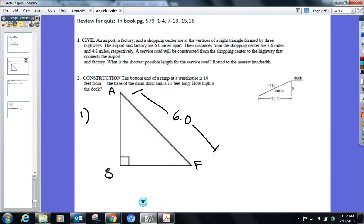And let's see, what's the 3.6? If it says respectively, which one came first? Airport, so shopping center to airport is 3.6. And it looks like shopping center to factory is going to be 4.8. All right, we're ready for the right triangle, and that's all set.